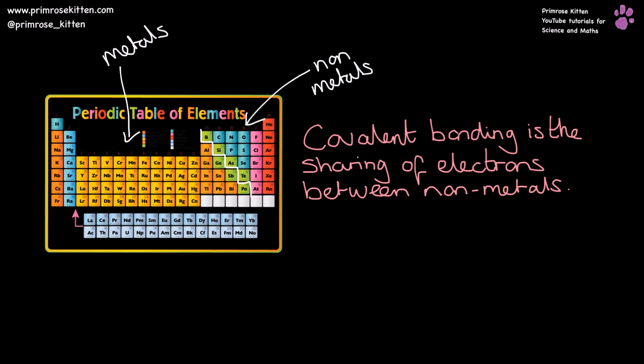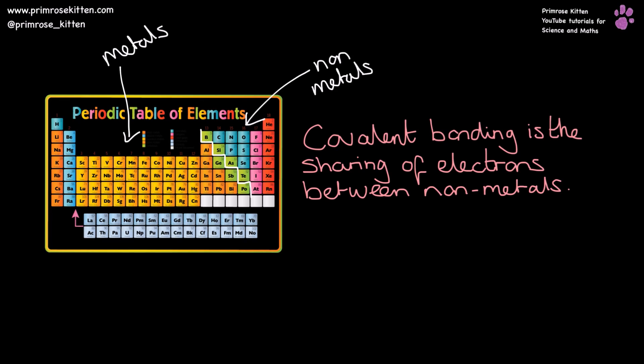Covalent bonding is a sharing of electrons, and it happens between non-metals. Here are some simple covalent compounds. I would expect that you can, with relative ease, draw and name each of these. If you can't, I have made a separate video walking you through how to do them, but it is well worth practicing, as this is something you're going to be asked to do a lot.